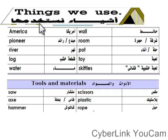Things we use. We have here vocabulary: America, wall, pioneer, room, river, pot, log, toy, water.